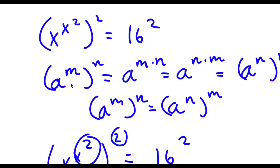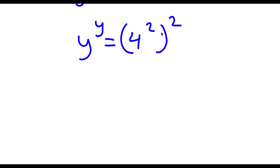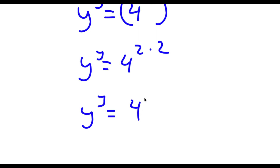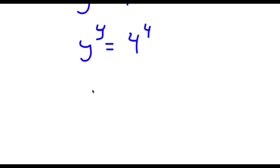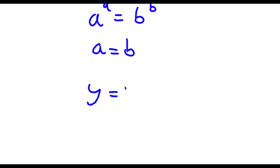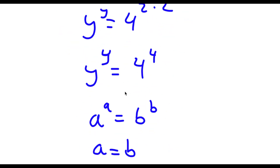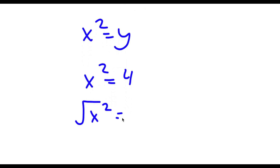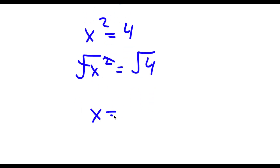Remember, a to the power of m to the power of n equals a to the power of m times n, so 4 to the power of 2 to the power of 2 equals 4 to the power of 2 times 2, and 2 times 2 is 4. So I have y to the power of y is equal to 4 to the power of 4. If a to the power of a equals b to the power of b, then a equals b, so y equals 4. Since x squared equals y and y equals 4, x squared equals 4. Taking the square root of both sides, x is equal to positive or negative 2.